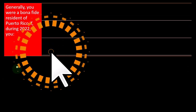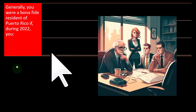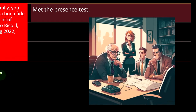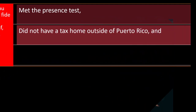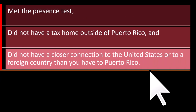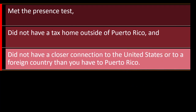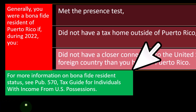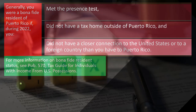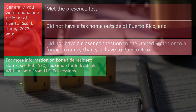Generally, you were a bona fide resident of Puerto Rico if during 2022 you met the presence test, did not have a tax home outside Puerto Rico, and did not have a closer connection to the United States or to a foreign country than to Puerto Rico. For more instructions on bona fide resident status, see Publication 570 on the IRS website — Tax Guide for Individuals with Income from U.S. Possessions.